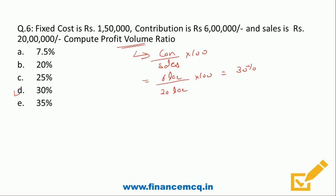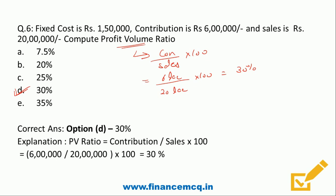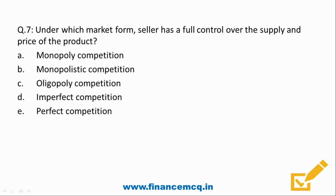Question 7: Under which market form does a seller have full control over the supply and price of the product? Option A: Monopoly, B: Monopolistic competition, C: Oligopoly, D: Imperfect competition, E: Perfect competition. Full control over both supply and price is possible only in monopoly competition, because there is only one seller who controls both. The correct answer is Option A: Monopoly competition.